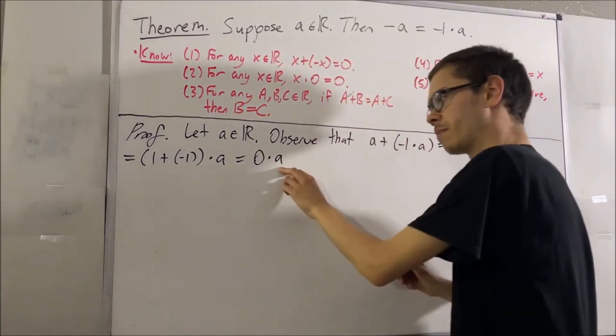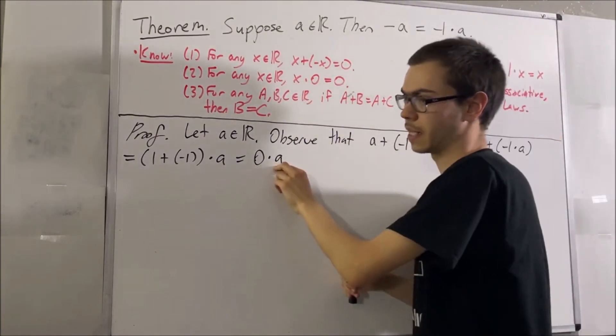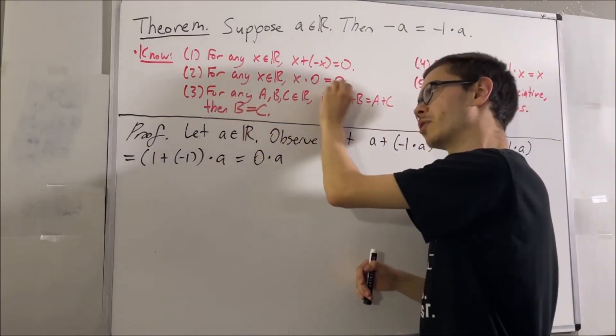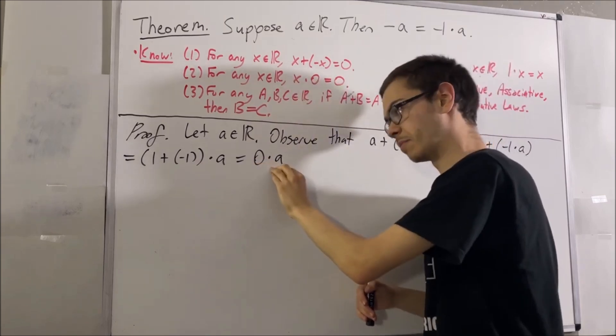So, we get 0 times a, right? And of course, according to the commutative law, we know that 0 times a is equal to a times 0. And from fact number 2, we know that any number times 0 is equal to 0. So, this must be equal to 0.